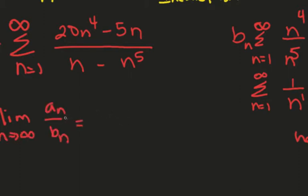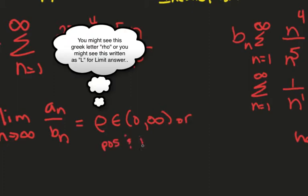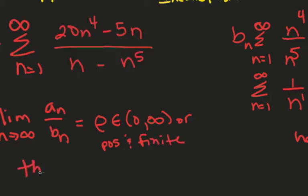If the answer to this limit, which they call rho, is an element of 0 to infinity, or another way of saying it is it's positive and finite, then a sub n behaves just like b sub n. So, if b sub n converges, then a sub n converges. If b sub n diverges, then a sub n diverges.